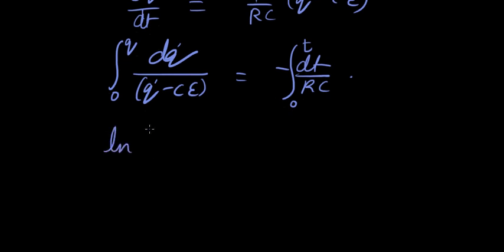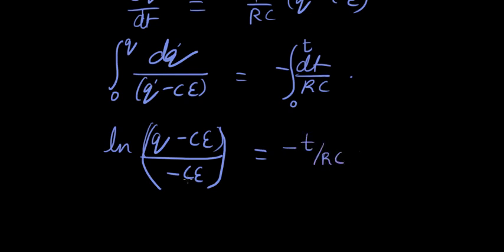Natural log of q minus ce over minus ce. Equals here, this is a constant. And the integration of dt is what? t. So minus t over rc.